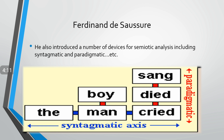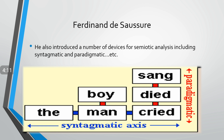According to Ferdinand de Saussure, semiotic analysis includes syntagmatic and paradigmatic devices. Syntagmatic devices are the rules which connect the different units and components of language. For example, in the sentence 'the man cried,' there is a kind of interconnection between 'the man' and 'cried.' It means that if I want to acquire the English language, I need to understand these structures and learn the interconnection between these words, components, or units.